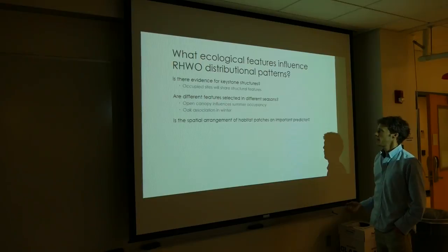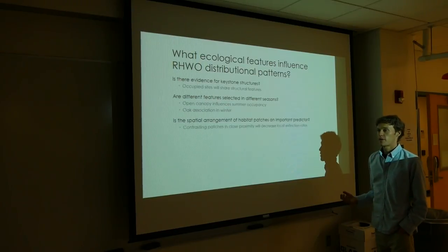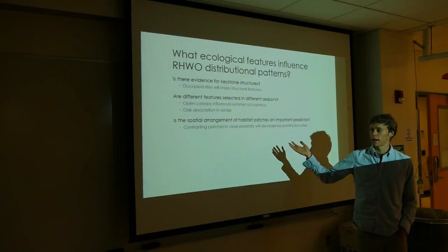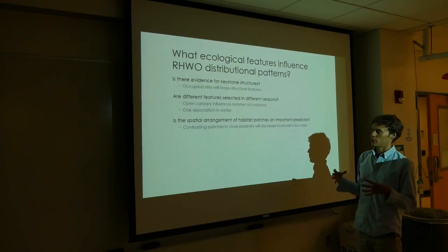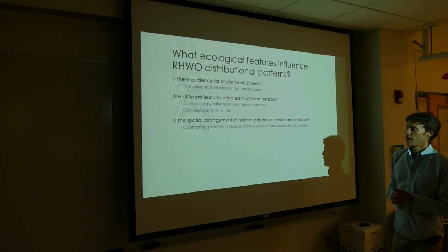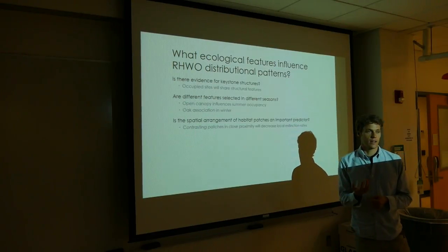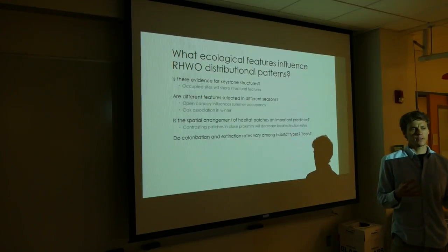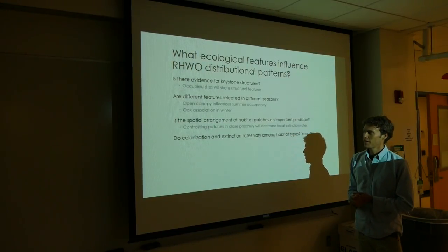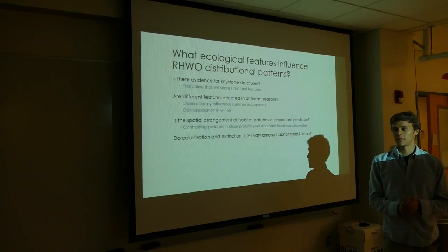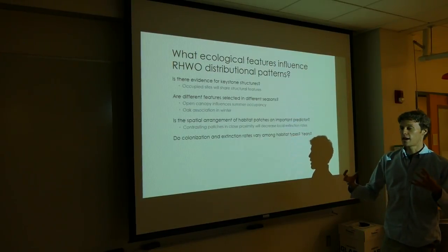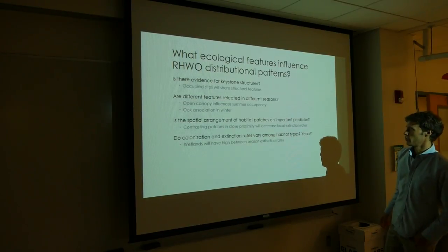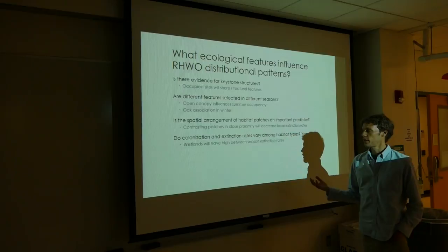Is there a spatial arrangement of habitat that's an important predictor? This is taking landscape ecology perspectives and applying them at finer spatial scales. The Red-headed Woodpecker is generally thought of as a generalist species that doesn't have really strict habitat requirements, but I think that it's more of a mosaic specialist species, and that it needs contrasting patches in the landscape in order to fulfill its life history requirements.